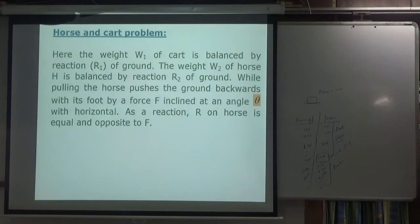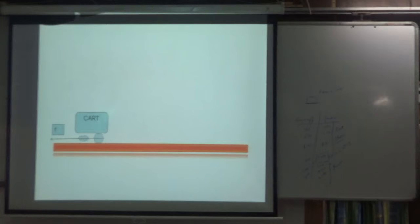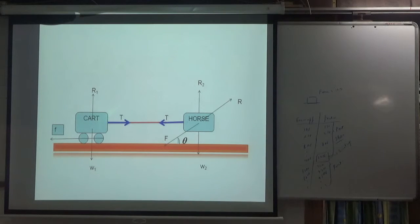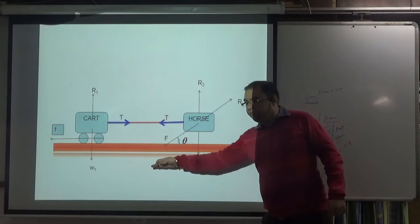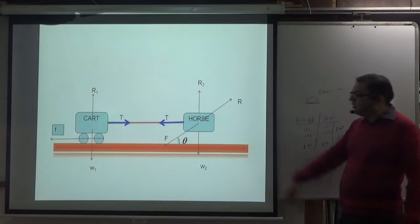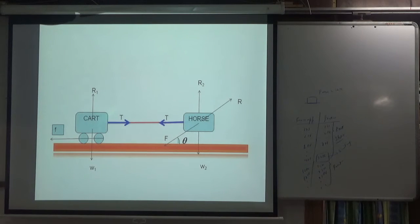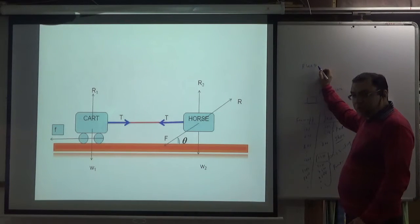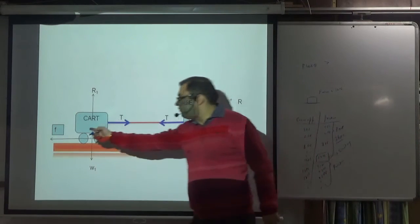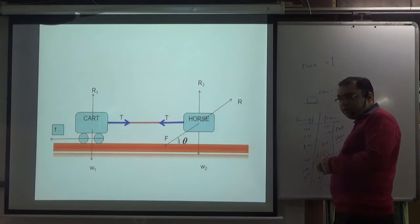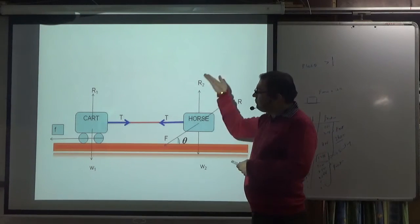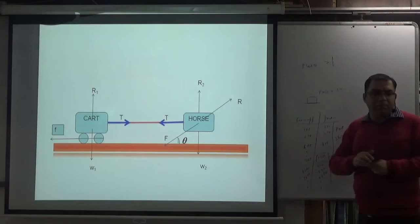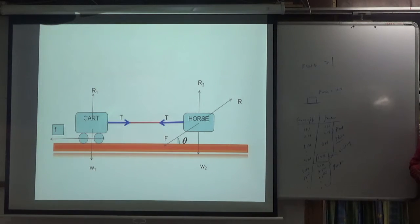In the horse-cart problem: a cart and horse are tied with a string having tension T. The normal reactions are R1 and R2, and weights are W1 and W2. The horse exerts a force R with a vertical component and a horizontal component R cos θ. This horizontal component R cos θ overcomes friction and moves the cart. Vertical forces cancel, and horizontal forces are analyzed to solve the problem.